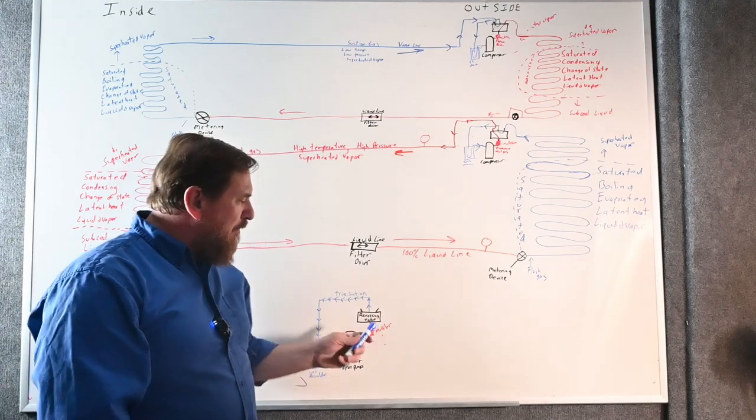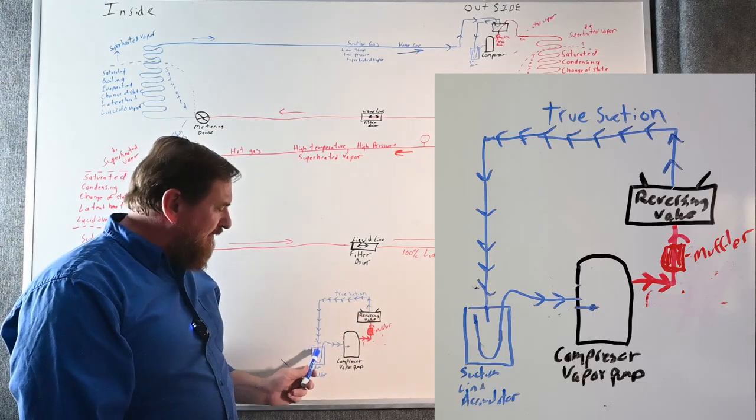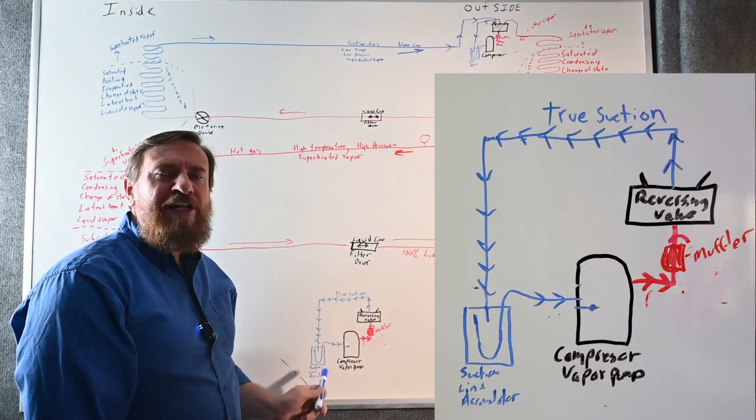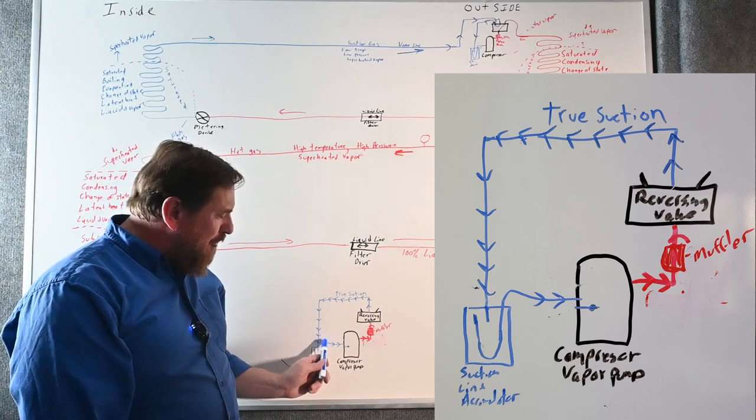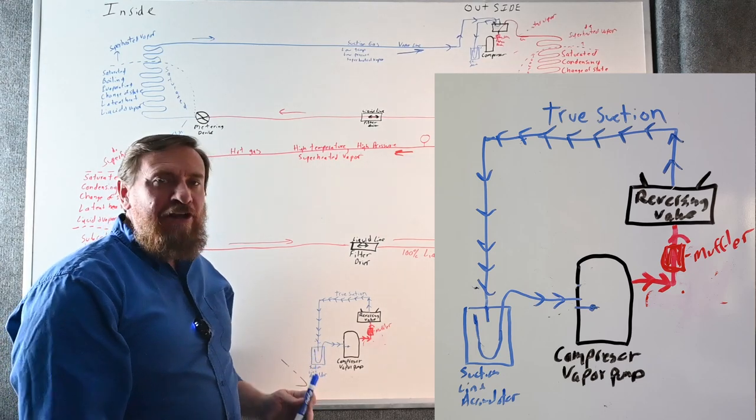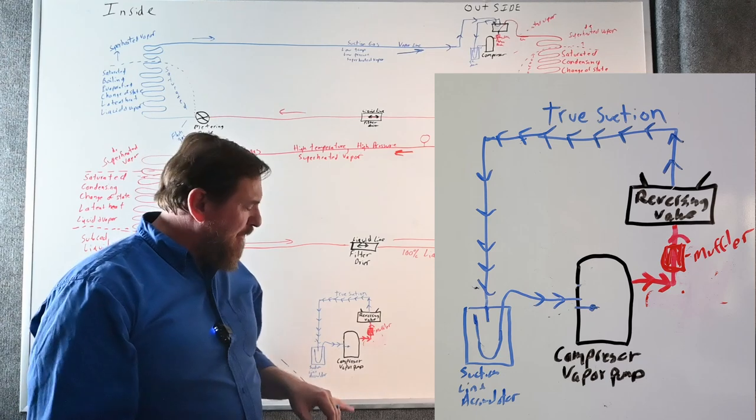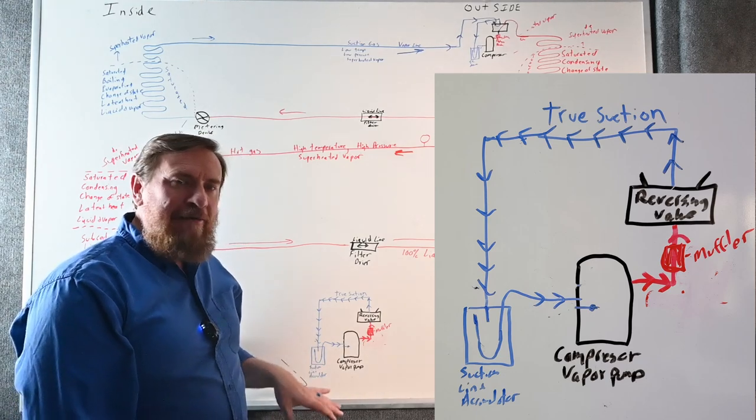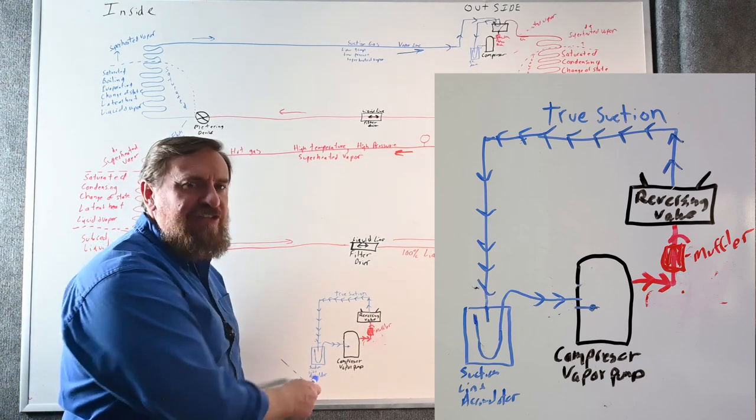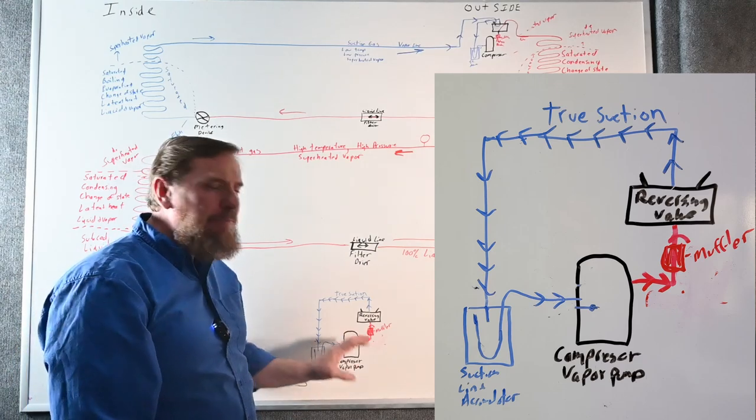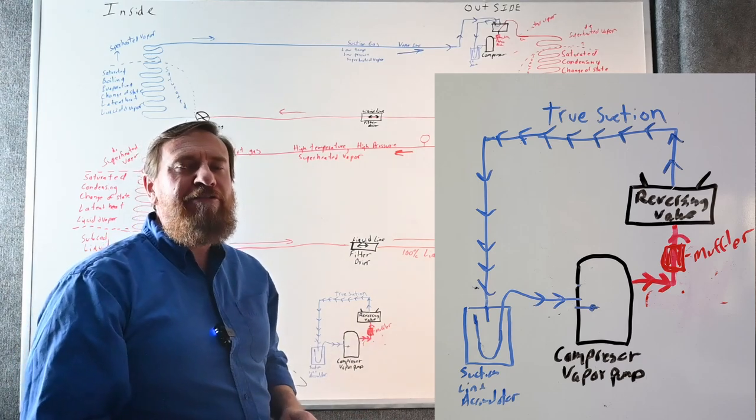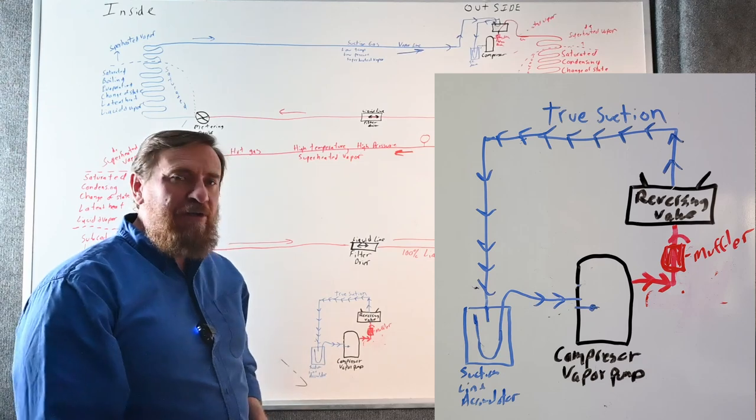As far as our drawing goes, where we have our true suction line, we just simply add our suction line accumulator there. We just simply add it. I like to draw the little loop inside of there, so I understand and make sure that we remember the importance of that oil port in there. But as long as we draw something representing there's a suction line accumulator protecting the compressor from the potential of liquid refrigerant coming back, that's what's important.